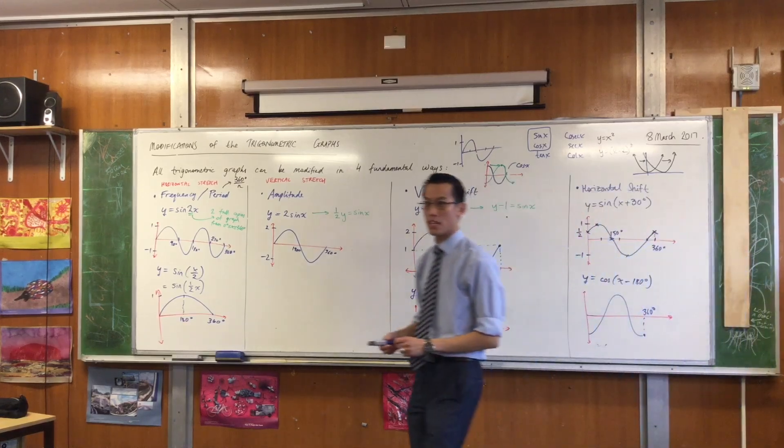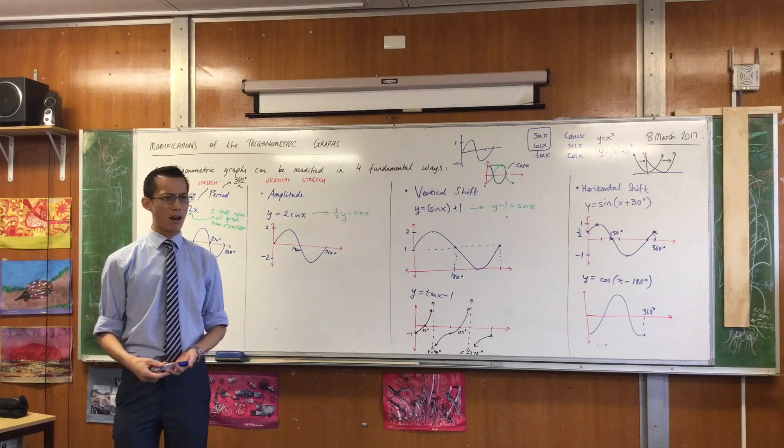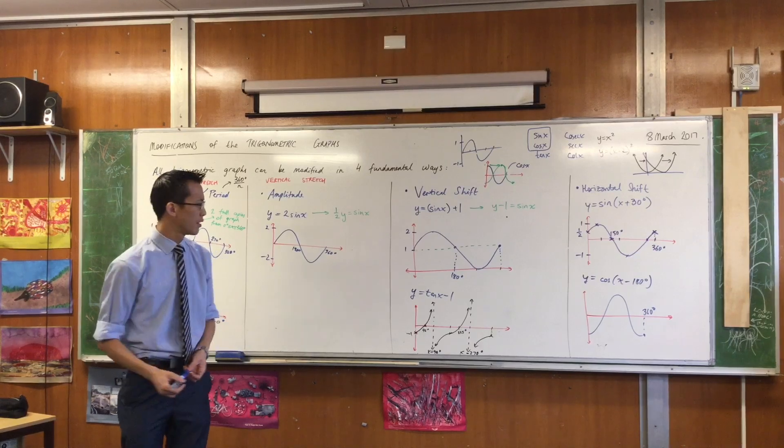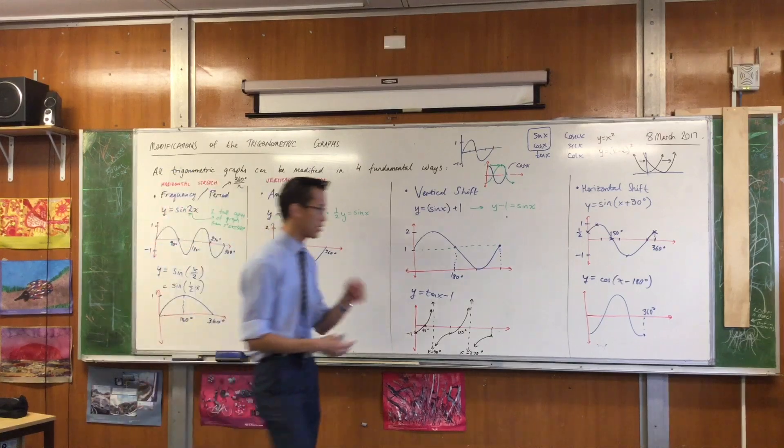What's the relationship between this and the original cosine graph? It's the same graph but upside down, which is a little bit weird. What we've done is we've moved horizontally, but the effect has been a reflection.